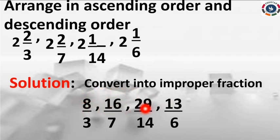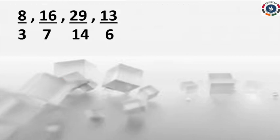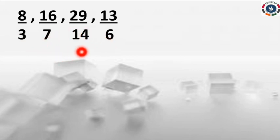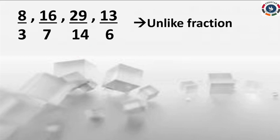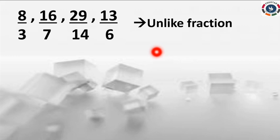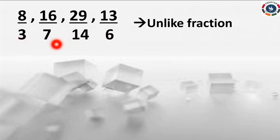Now we are going to use these four fractions. The denominators are 3, 7, 14, and 6 — all different. So these are unlike fractions. We want to convert them into like fractions, meaning all denominators should be the same. To convert unlike fractions into like fractions, we must find the LCM of the denominators: 3, 7, 14, and 6.